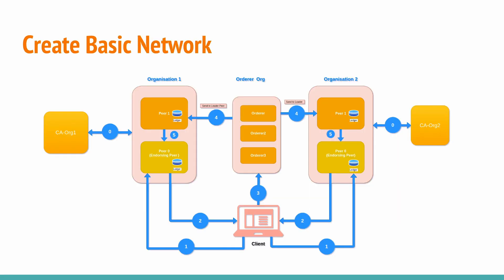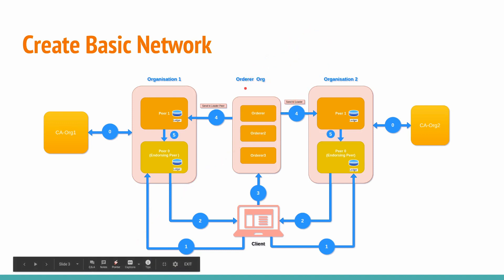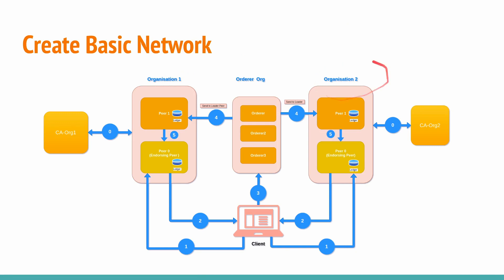In the first section we will create a basic network. I have created a repo for this. On the screen you can see the different components — we have two organizations. The first is the orderer organization, the second is the peer organization. In the peer organization we have two organizations: Organization 1 and Organization 2. In Organization 1 we will have two peers, and one of the peers is the endorsing peer.